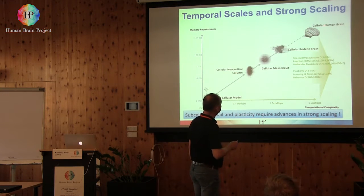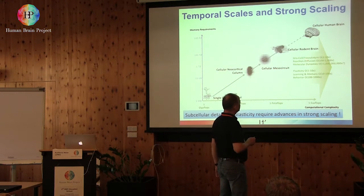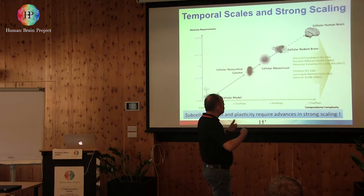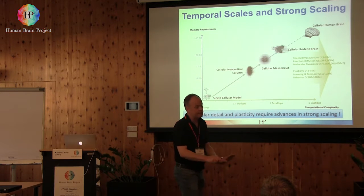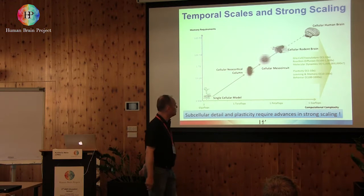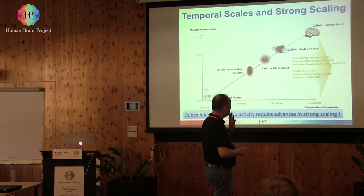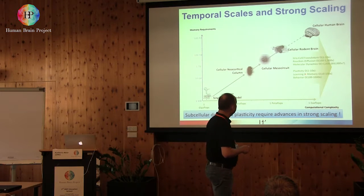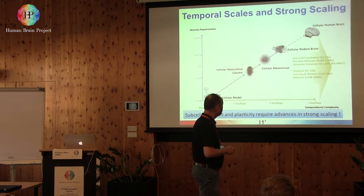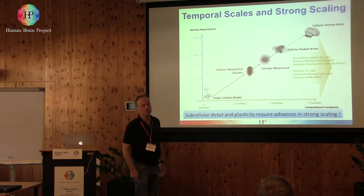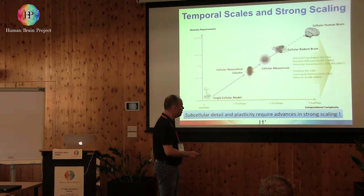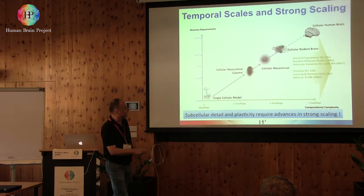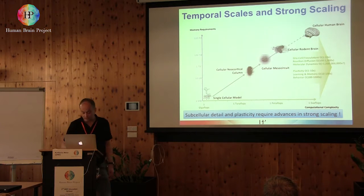Today we run petaflop computers — 10-petaflop machines. With these, people can simulate what they call a cellular mesocircuit. With an exascale computer, maybe 500 million euros worth, we could step up to a cellular brain model. But even then, the machine runs slowly — covering perhaps hundreds of milliseconds or a few seconds of biological time. Going further requires more computational complexity: adding glial cells and blood supply needs perhaps a factor of 10 more; going below the cellular level needs a factor of 1000 more; molecules need billions more. And learning alone needs a factor of 100 to 1000 more.